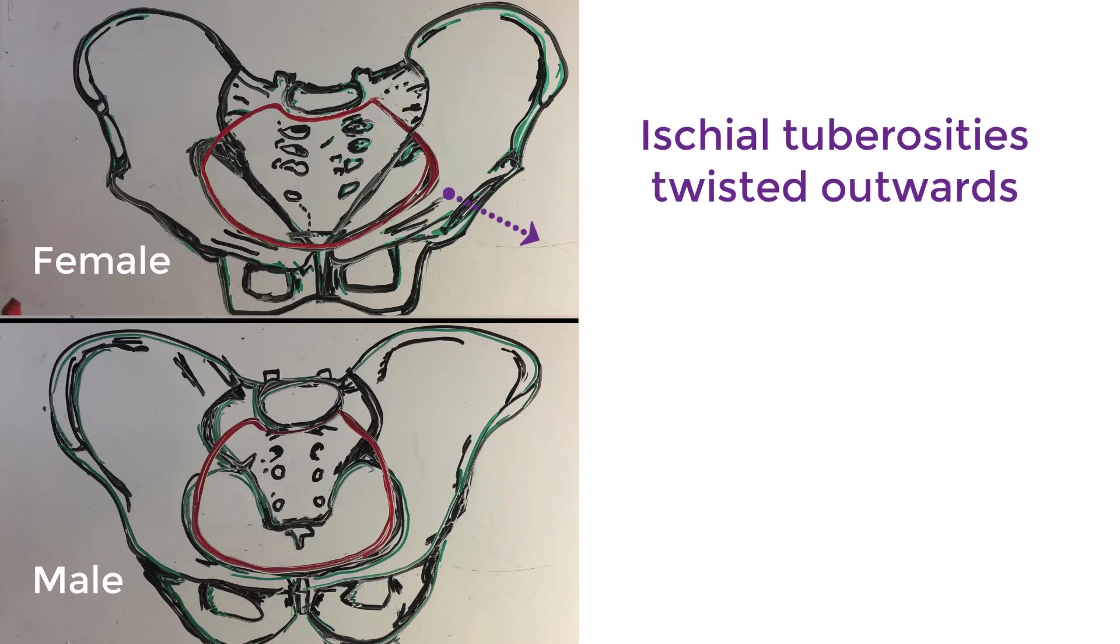Thirdly, the ischial tuberosities are twisted outwards in order to increase the pelvic outlet.